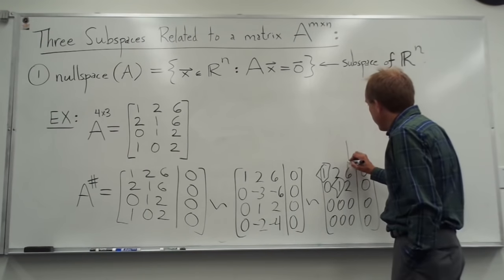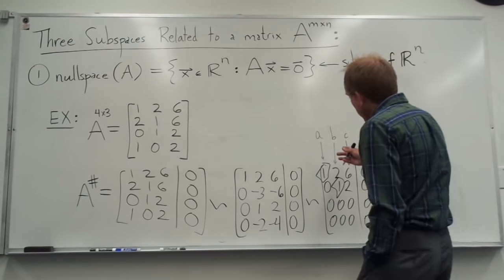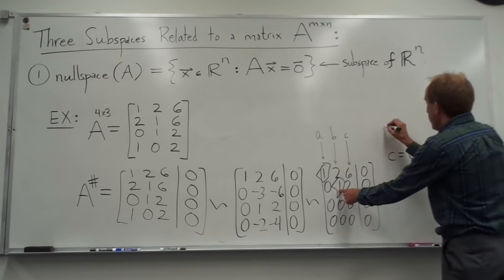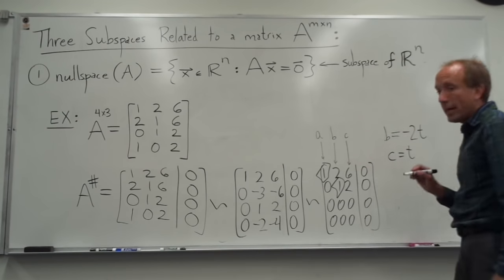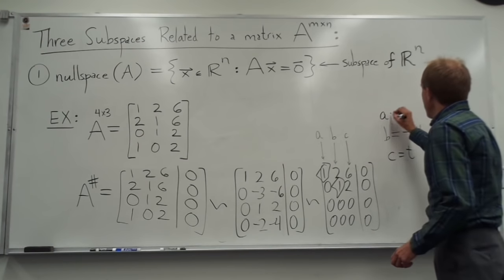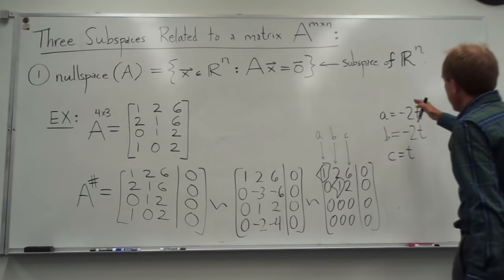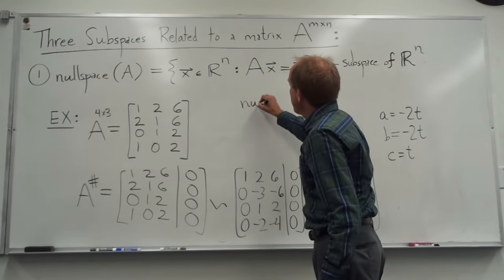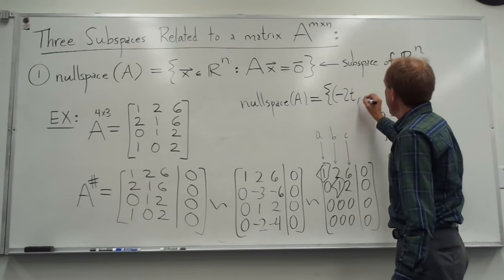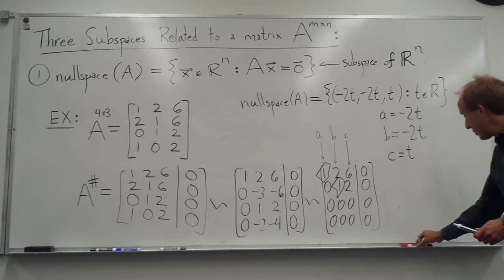We have a free variable here. Let's call the variables associated with the three columns A, B, and C. So C is a free variable — I'll call it T. When I back substitute with the second row, B ends up equaling negative 2T. Then plugging that in, I can solve for A — A is also negative 2T. So the null space of A is the set of vectors (negative 2T, negative 2T, T) such that T is a real number.